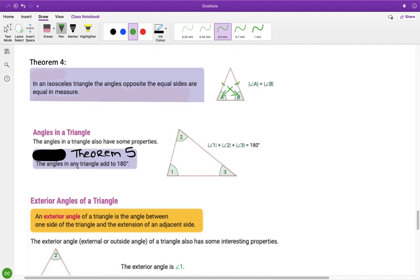Okay, so in an isosceles triangle, the angles opposite the equal sides are equal in measure. Theorem number five here are the angles in a triangle. The angles in a triangle add up to 180. So every triangle will have three angles because it has three corners or vertices. And the three corners must add up to 180 degrees.